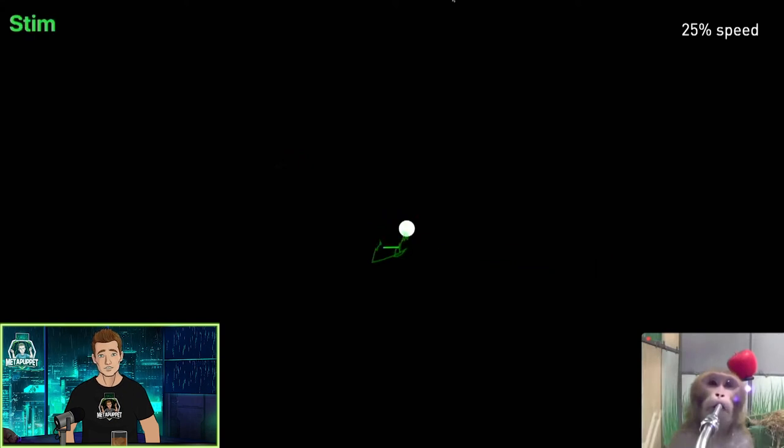The monkey thinks it's seeing this flash on the screen, but really, there's nothing there. Researchers know that he's seeing the flash because his eyes move to it. You can think of these phosphines as pixels on a TV screen. Put enough of them together, and it will create a picture.